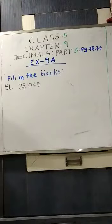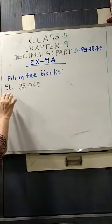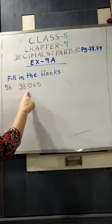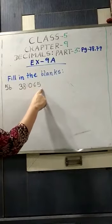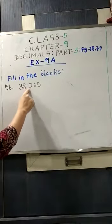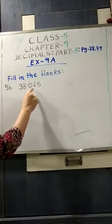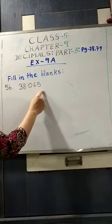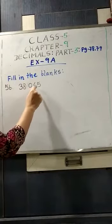You can see that I have written on the board. You can also see your book. So, sum number 5B: 38.065. I told you that after decimal, we say the digits separately. That is why I have said 065.